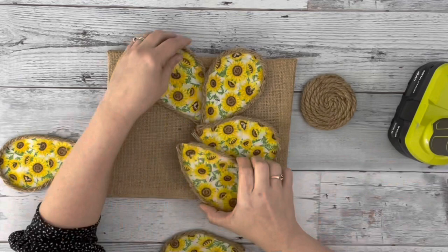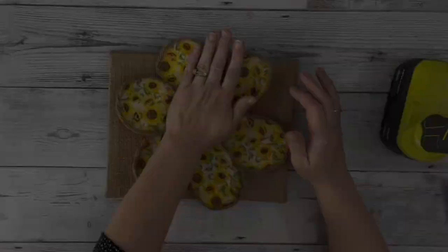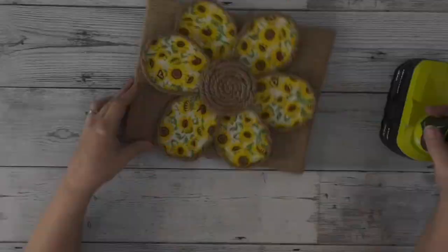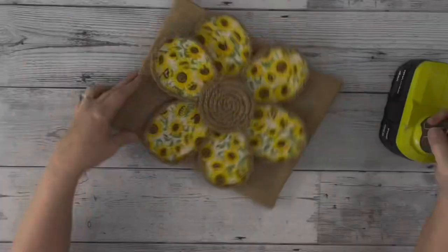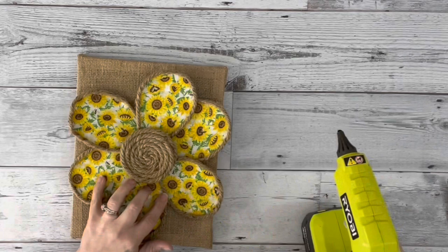And then once I have them set, I put some hot glue around on each of the petals and place down my circle. Once I have that glued down, I go around and just put a little bit of glue on each petal underneath the ones that they're overlapping to glue them all down.